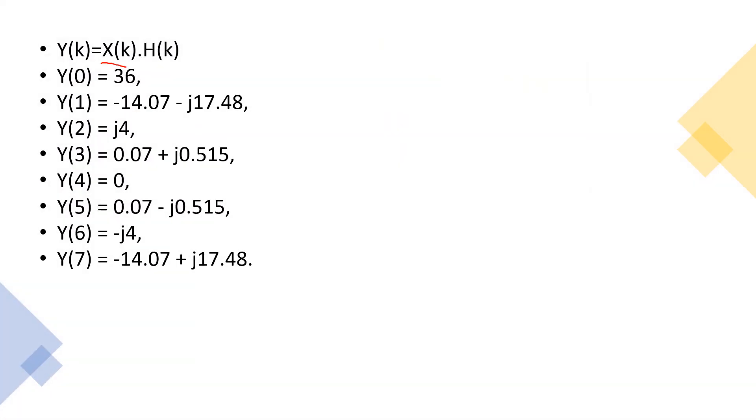The product of x of k and h of k will give us y of k. So y of 0 is equal to x of 0 into h of 0. Similarly, y of 1 is equal to x of 1 into h of n. Similarly, we can calculate y of 2, y of 3, y of 4, y of 5, y of 6 and y of 7.